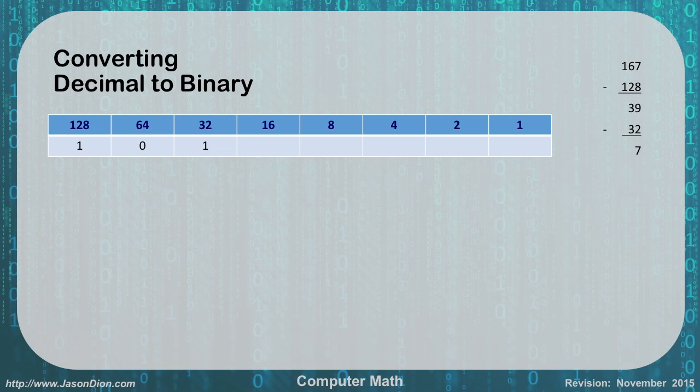Can 16 come from 7? No, so it's 0. Can 8 come from 7? No, so it's 0. Can 4 go into 7? Yes, so we put a 1 there and that leaves us with 3.